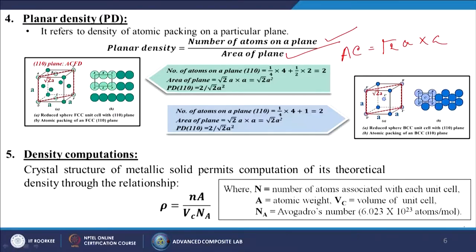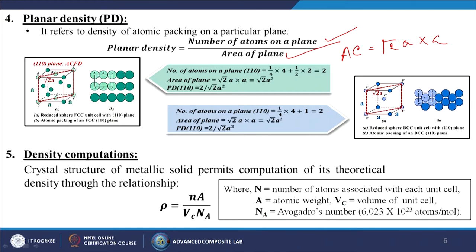For the BCC structure, the number of atoms on the (1,1,0) plane is (1/4 × 4) + 1 (centre atom) = 2. The area of the plane is √2·A × A = √2·A², so the planar density for the (1,1,0) plane in BCC is also 2/(√2·A²).